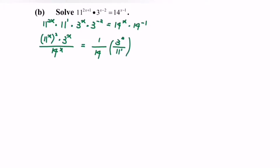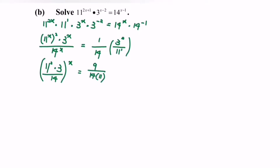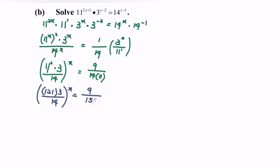Rewrite the equation. We will have 11 squared multiplied with 3 over 14, to the power of x, equals 9 over 154. As we know, 11 squared is 121, so 121 multiplied with 3 gives us 363 over 14, to the power of x, equals 9 over 154.